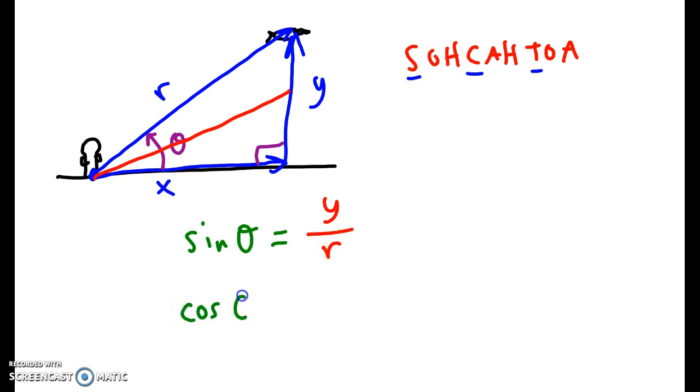What if I write cosine? Well, cosine uses adjacent over hypotenuse. Hypotenuse is R, it's across the 90 degree angle. But what's the adjacent? It's the other one that forms the angle, so x is adjacent.